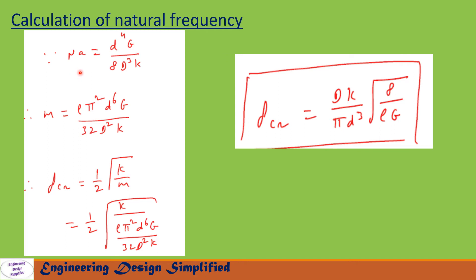N_a is the number of active coils. The formula for that is N_a equals d to the power 4 G by 8 D cubed k, where G is the modulus of rigidity of spring material. Let us substitute this N_a into the mass equation: m equals rho pi squared d to the power 6 G by 32 D squared k.